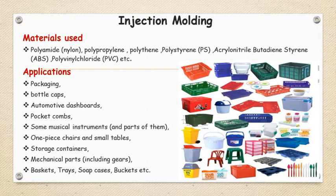Injection molding is used to process thermoplastic materials. Examples of thermoplastic materials used in injection molding include polyamide, polypropylene, polyethylene, acrylonitrile butadiene styrene (ABS), polycarbonate, and polyvinyl chloride (PVC). These are the materials commonly processed using the injection molding process.